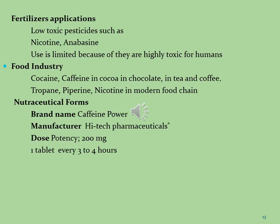Alkaloid phytoconstituents can also be used in the field of fertilizers. Low-toxic pesticides such as nicotine and anabasine are used in the field of agriculture, though they must be used in limited amounts because they are highly toxic for humans. Alkaloids are also used in the food industry — for example, cocaine and caffeine in cocoa, chocolates, tea, and coffee. Similarly, tropine, piperine, and nicotine are used in modern food chains.